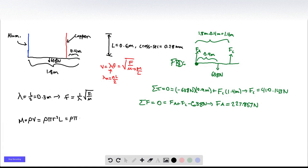Times pi times 0.28 millimeters squared times 0.6 meters. But we're going to have to consult some resources to get what rho is, because the density of aluminum is not going to be the same as the density of copper.